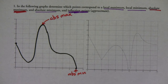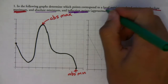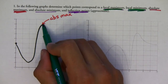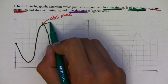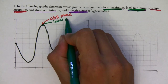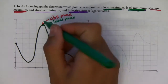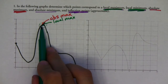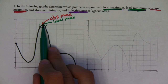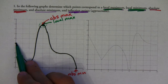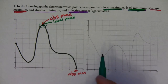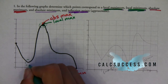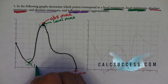Now let's do all of the local maximums and local minimums — those we're going to do in green. Note that just because a value is an absolute maximum doesn't mean it can't also be a local maximum. A value is a local maximum if it's bigger than every value around it. If you make a little bubble around it, this value is bigger than everything around it, so it's a local maximum. Endpoints are not candidates for local max or min. And right here we have a local minimum.